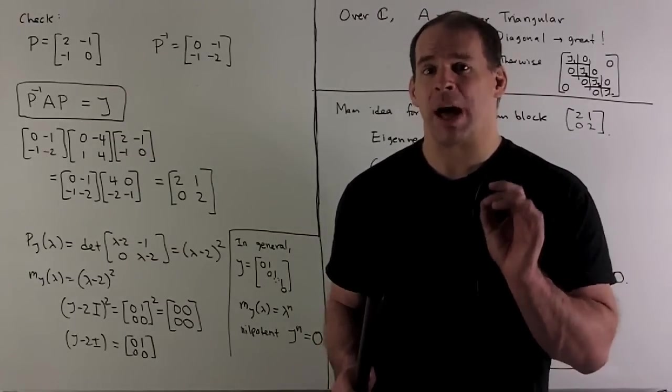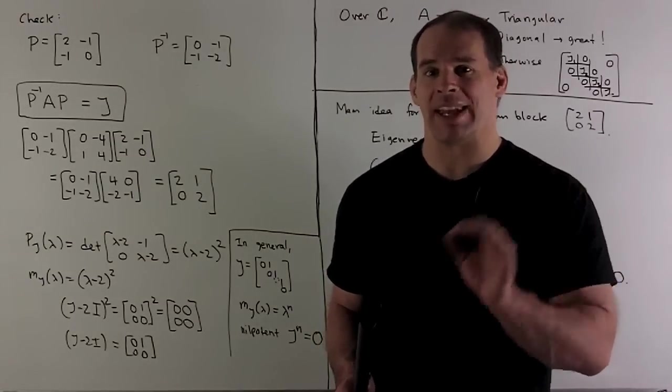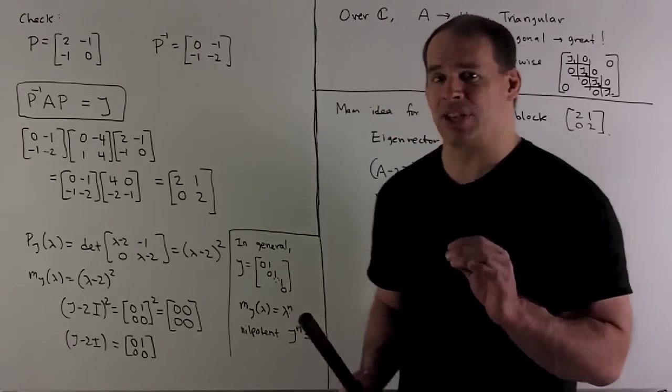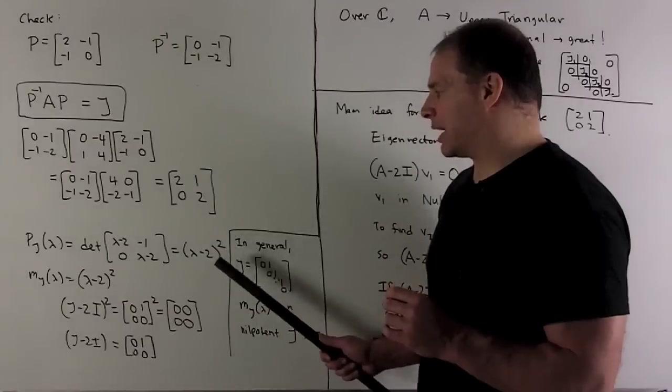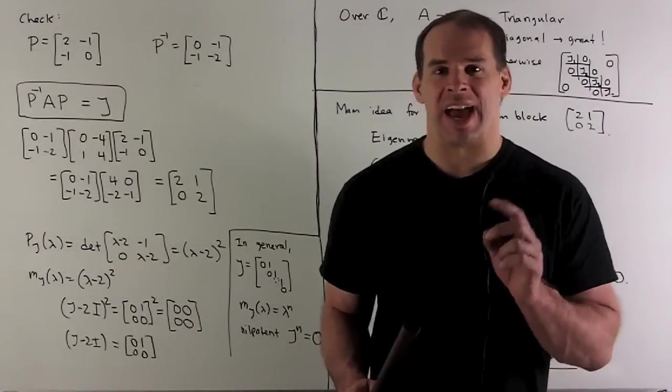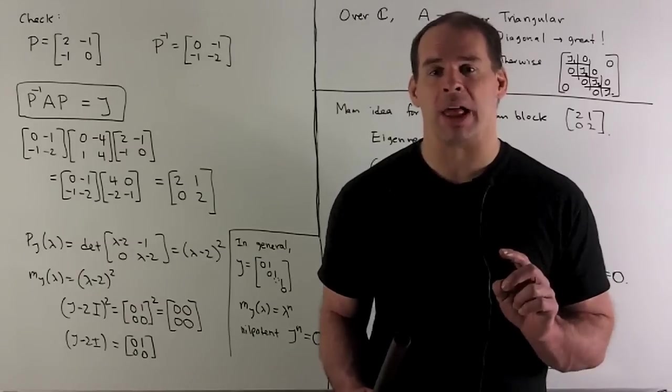So, the characteristic polynomial is a straight shot. We just multiply down the diagonal. That gives us, in our special case, (λ - 2)². In general, (λ - eigenvalue) raised to the size of the block.